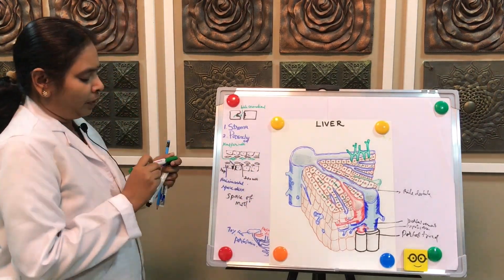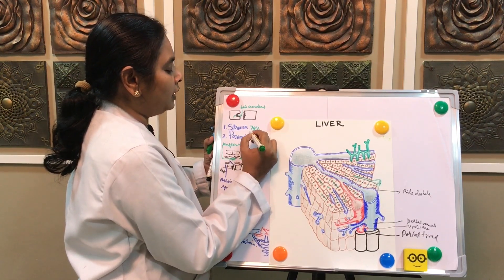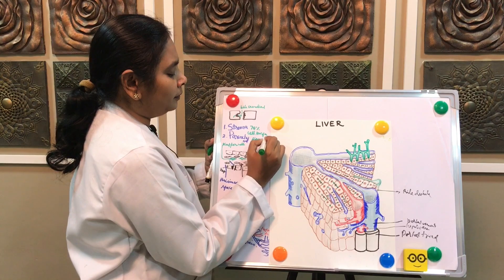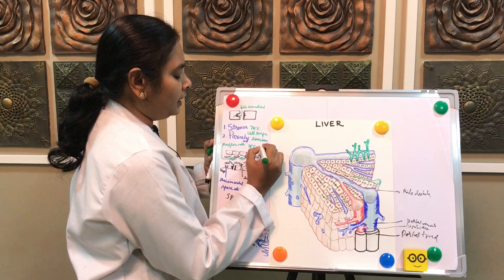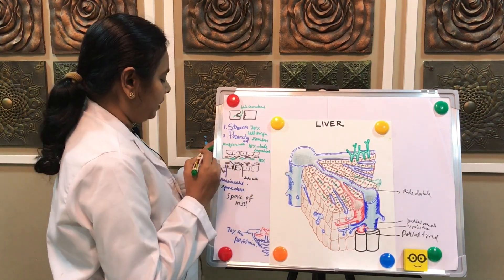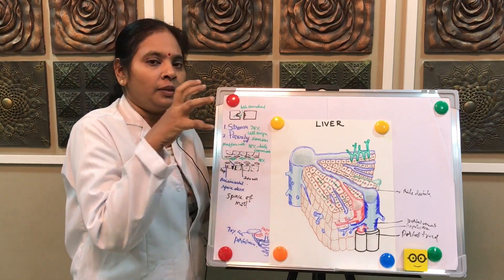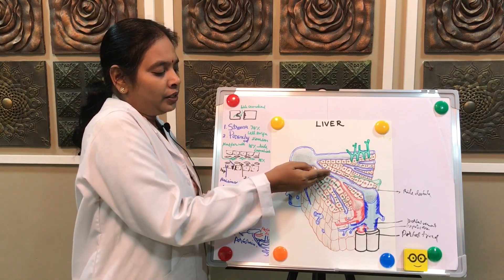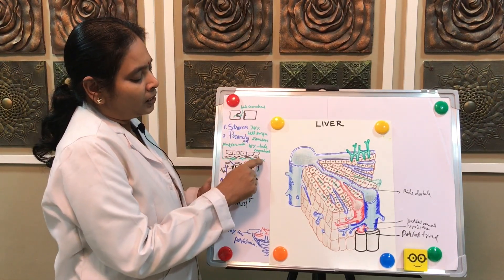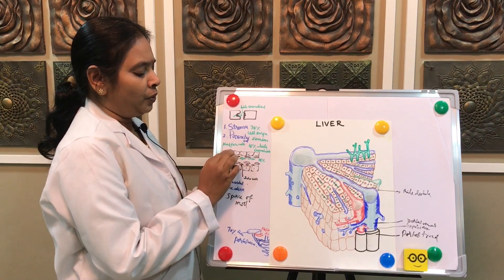The entire hepatocyte surface is arranged so that 70% of the cell surface faces the intercellular sinusoids, 15% of the cell surface faces the bile canaliculi, and the remaining 15% is joined with adjacent cells through tight junctions, allowing interchange between any two hepatocytes.